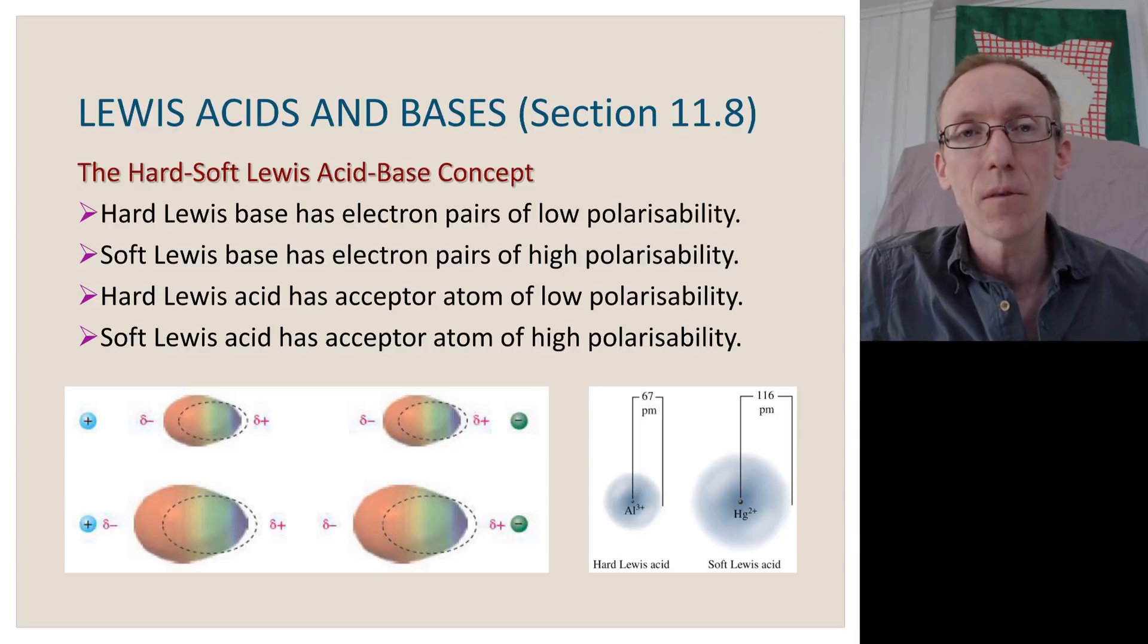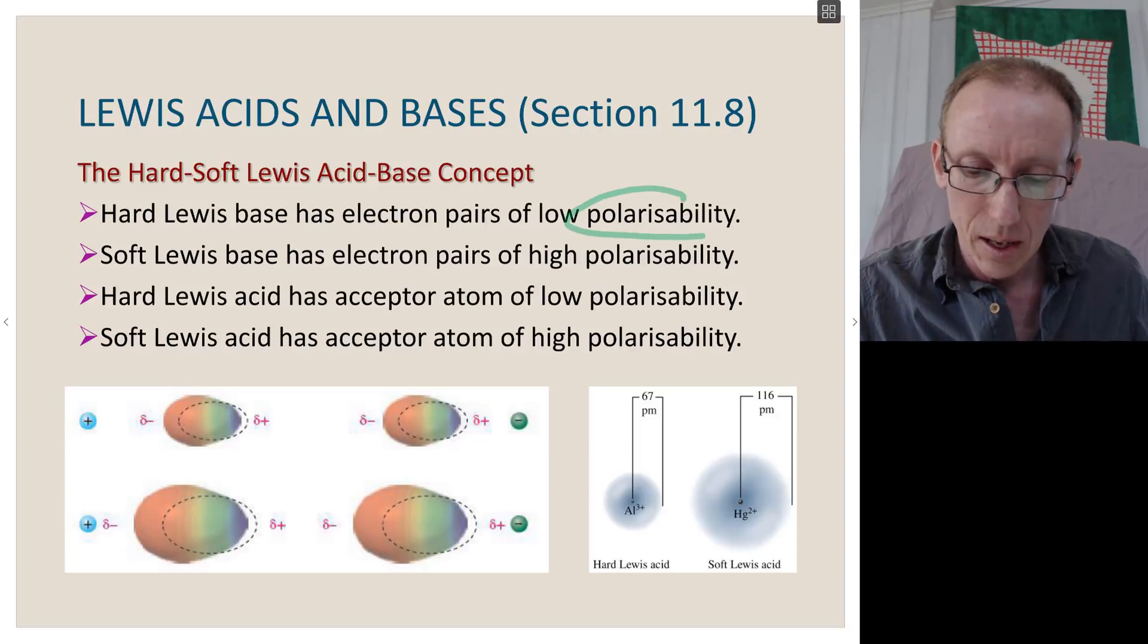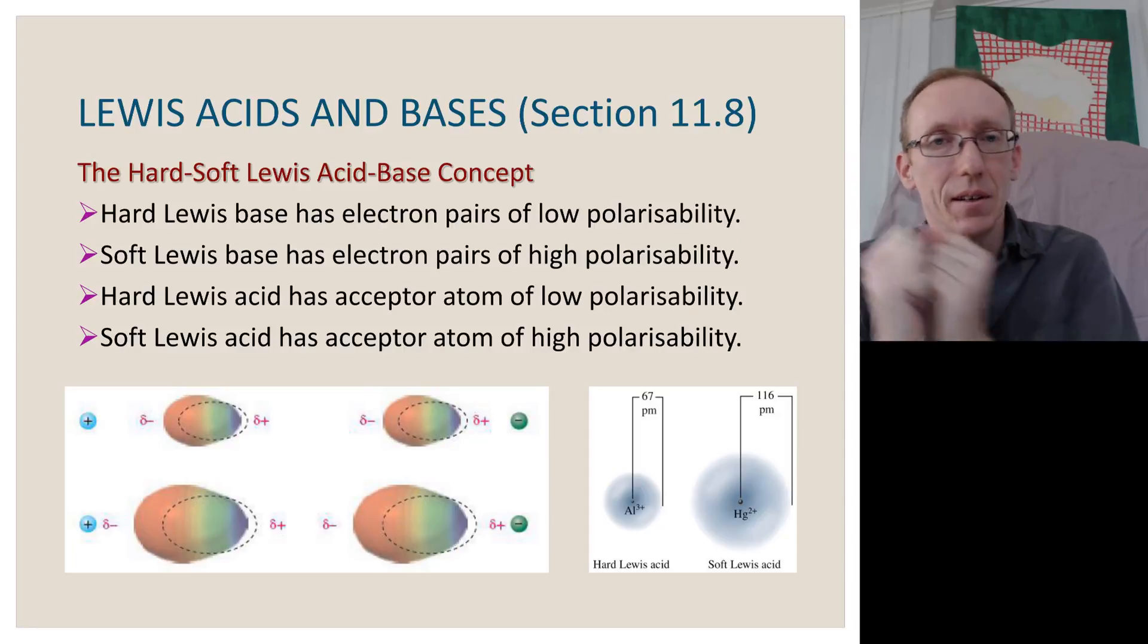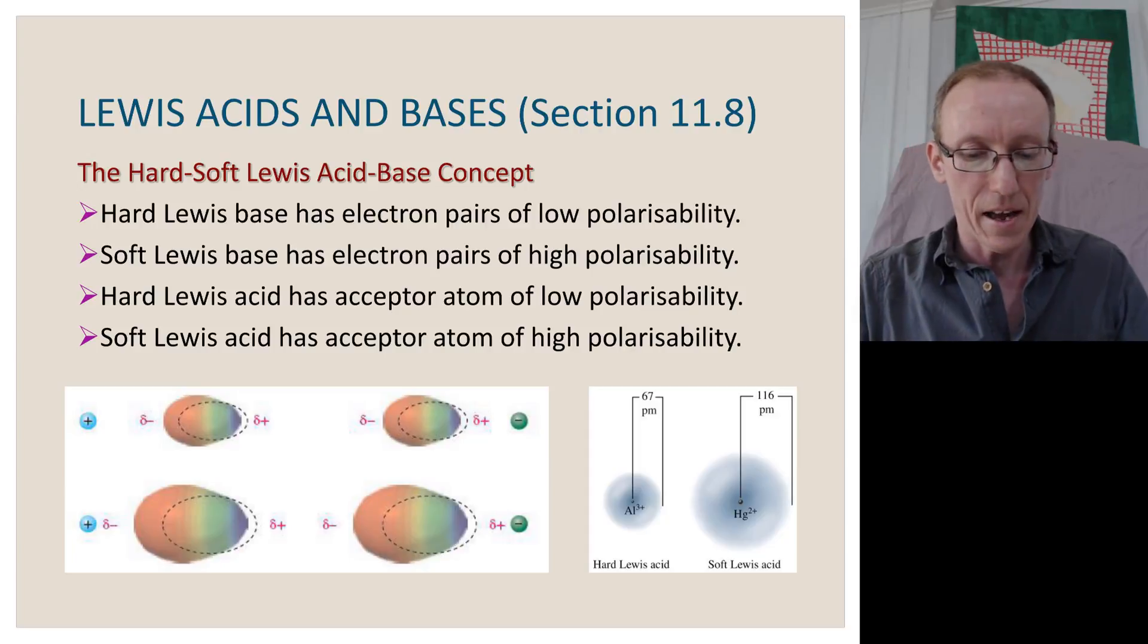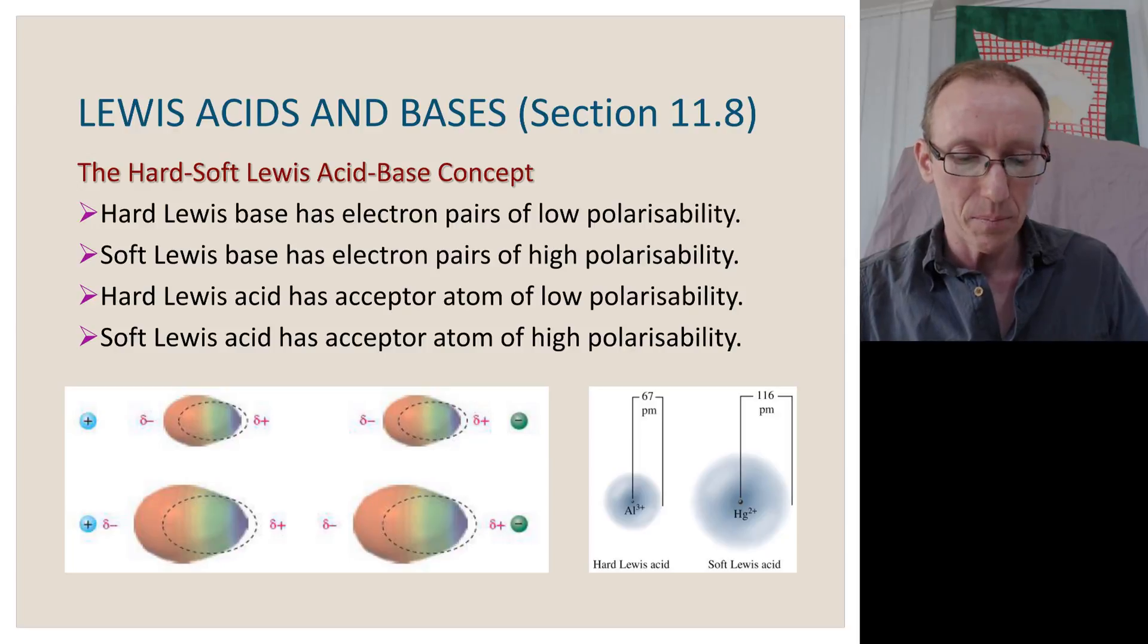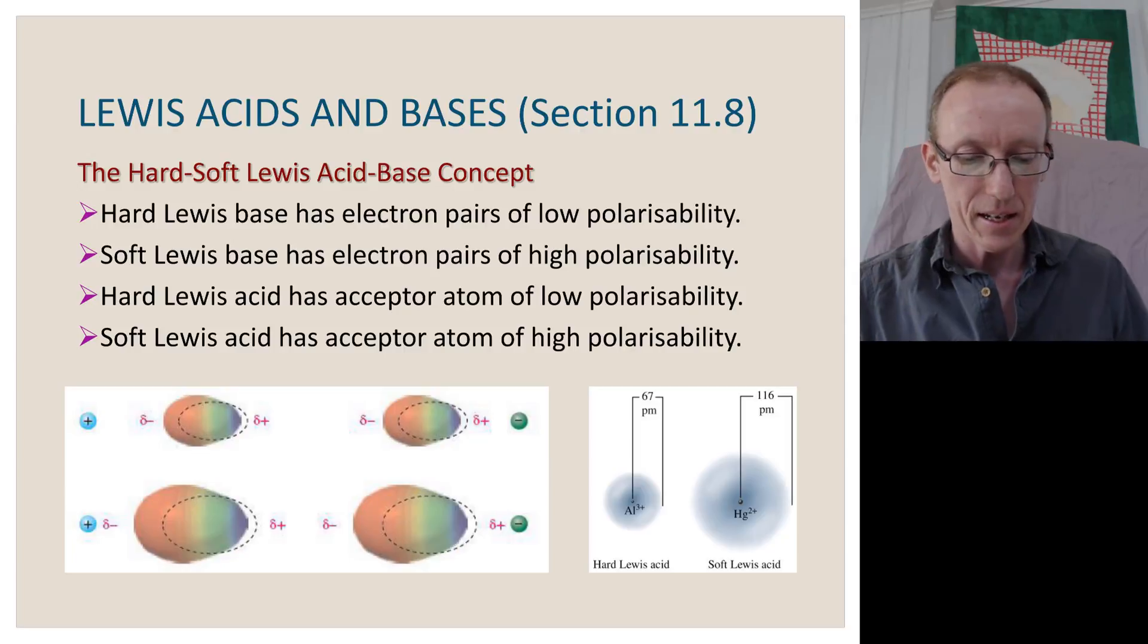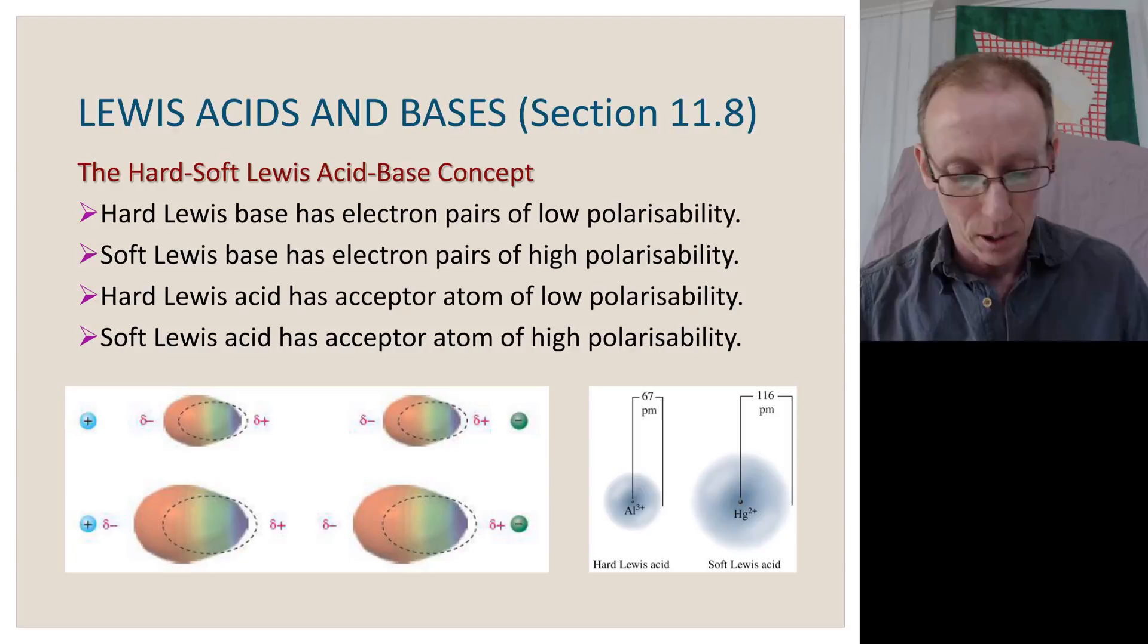So what do we mean by this soft and hard concept? So a hard Lewis base has electron pairs that are not polarizable. So this term polarizable is about how easily those electrons can be sort of smushed, for lack of a more scientific word, can be sort of pulled towards another entity. A soft Lewis base has electron pairs that are highly polarizable. And conversely, a hard Lewis acid has an acceptor atom that has low polarizability. And a soft Lewis acid has an acceptor atom that is very highly polarizable.